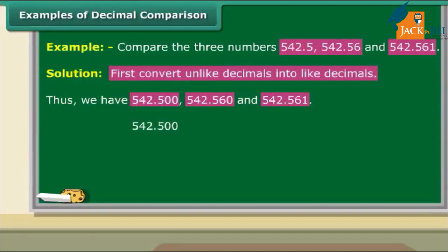Now concentrate on the decimal part alone. The first number represents 500 thousandths. Second number represents 560 thousandths. And the third number represents 561 thousandths. So, 542.561 is greater than 542.5 and 542.56. Similarly, 542.56 is greater than 542.5. Thus, 542.561 is greater than 542.56, which is greater than 542.5.